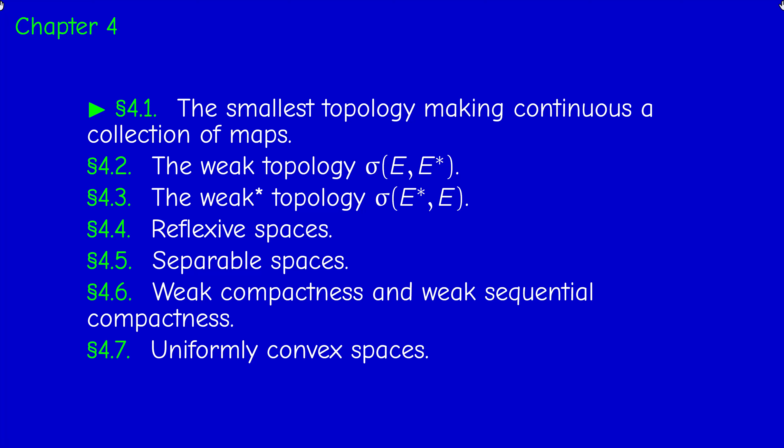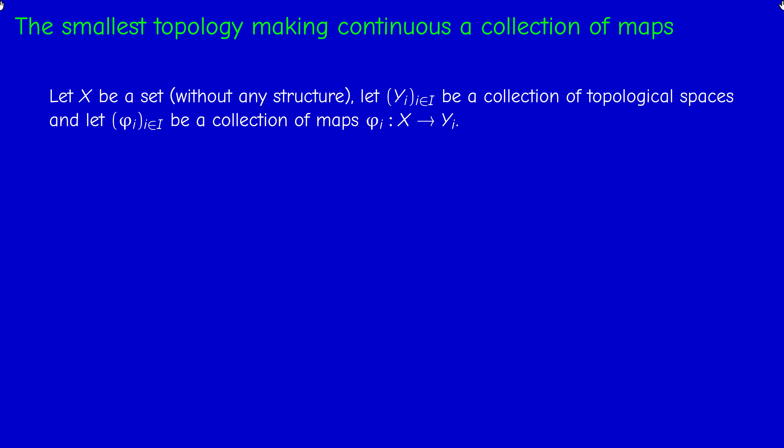In this video I'm going to cover the first section, which is a general construction from point set topology. It's about the smallest topology making continuous a collection of maps.